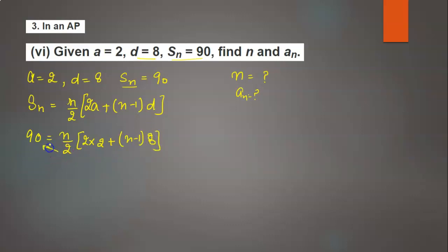Now simplify this. 2 is shifted to the left-hand side, so it will be 180. So 180 equals n times [4 plus 8n minus 8].